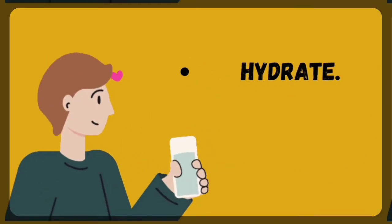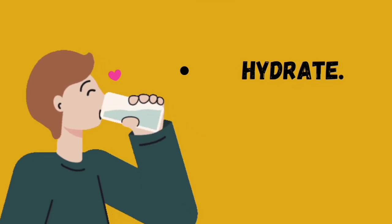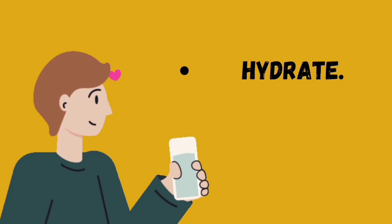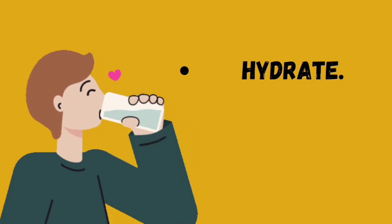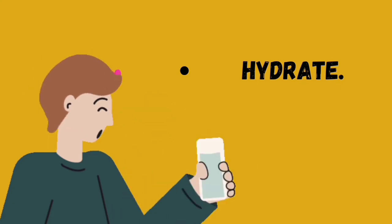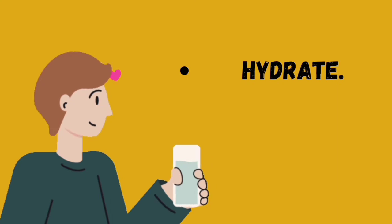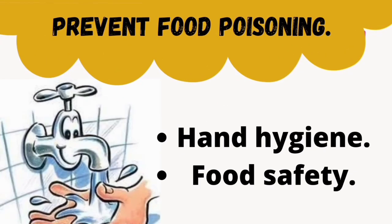We also need to talk about hydration. For both constipation and diarrhea, hydration is very important. Aside from relieving hard stool from constipation, water also helps replace the fluids lost during diarrhea. When it comes to food poisoning, through proper hand hygiene, hand washing, and food safety practices, we should be able to prevent food poisoning and hence prevent diarrhea.